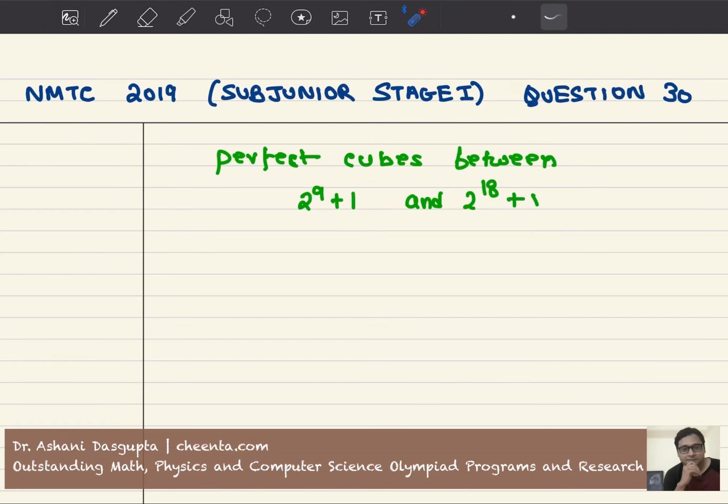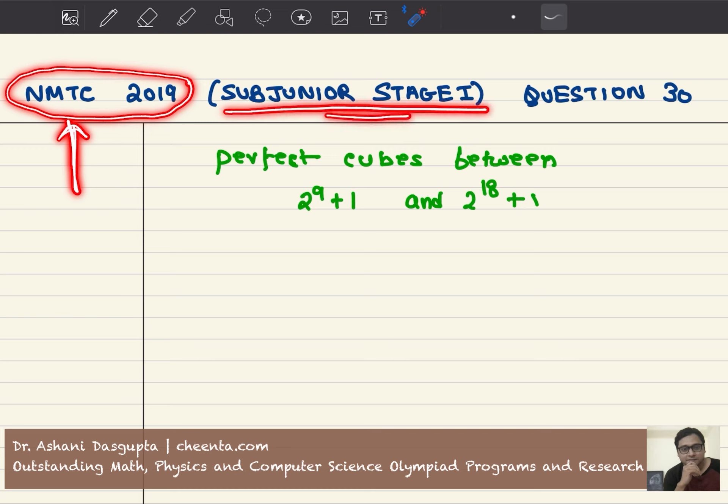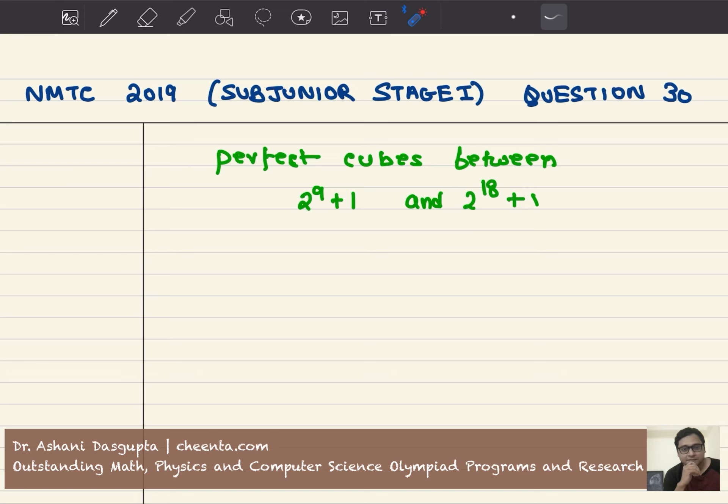Hello everyone, let's learn some number theory using this problem from NMTC 2019. NMTC is a great math olympiad contest from India, and this problem is from the sub-junior stage one. The problem says count the number of perfect cubes between 2 to the power 9 plus 1 and 2 to the power 18 plus 1.